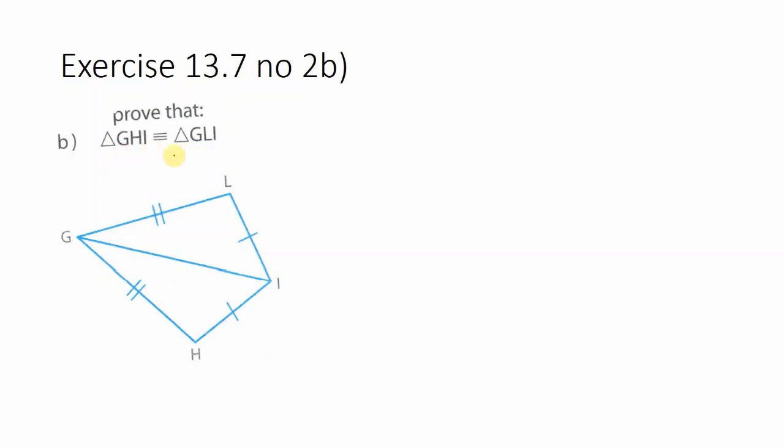So our introduction will be simply to start with what was given. We will say in triangle GHI and triangle GLI. So that is our introduction.